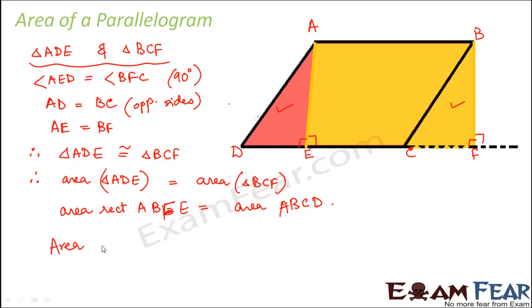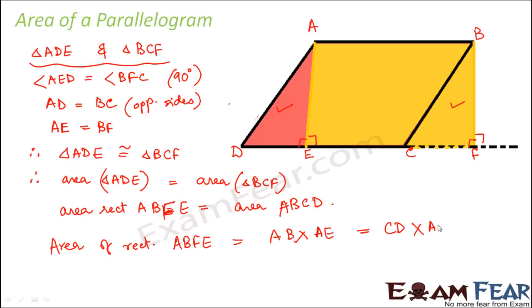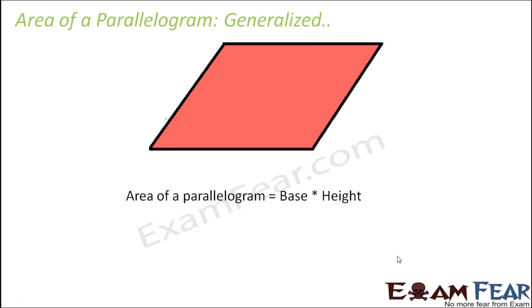Now how do we find out the area of rectangle ABFE? We know that area of a rectangle equals length times breadth. For ABFE, the length is AB and the breadth is AE — so it's AB times AE. We already know that AB equals CD because they are opposite sides of the parallelogram. So instead of AB we can write CD times AE. CD is nothing but the base of the parallelogram, and AE is nothing but the height of the parallelogram. Therefore, we can say that area of the parallelogram equals base times height.